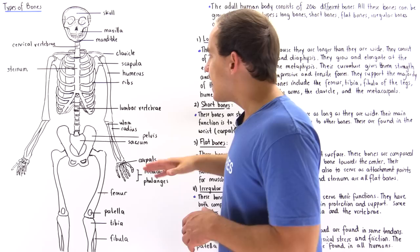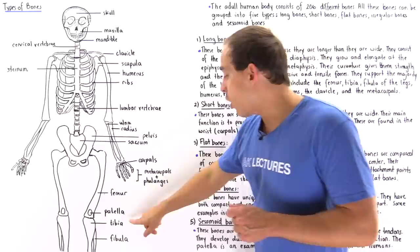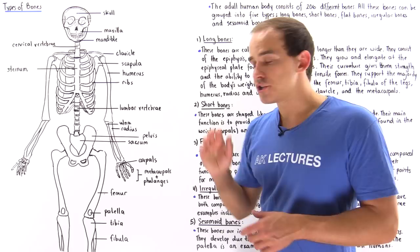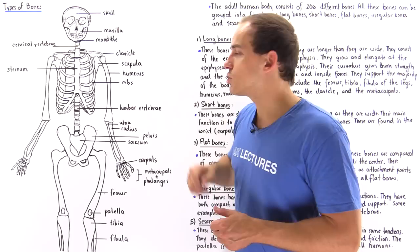If we examine our legs, the legs also contain long bones. We have the femur, which is a bone stronger than concrete. We also have the tibia and fibula, which are examples of long bones. In our fingers, the metacarpals are also examples of long bones, though much smaller than the leg bones.